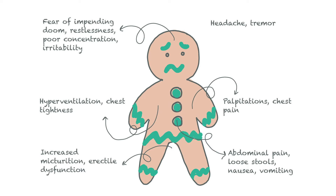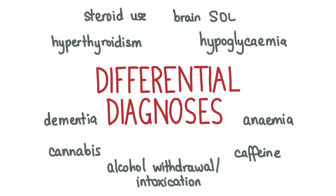Given these symptoms of anxiety disorder, can you think of any differential diagnoses to consider? Some medical causes include hypothyroidism, primary or secondary brain malignancy, anaemia, hypoglycemia and dementia. Substance-related causes include steroid use, high doses of thyroxine, alcohol intoxication or withdrawal, cannabis and caffeine use. Some psychiatric differentials include schizophrenia, depression and somatoform disorder.